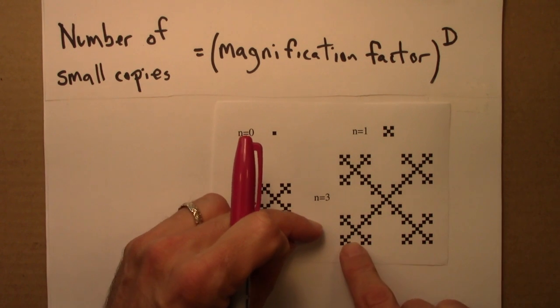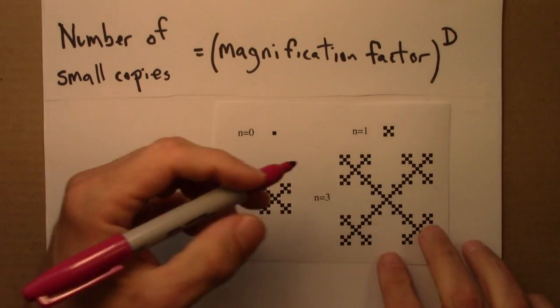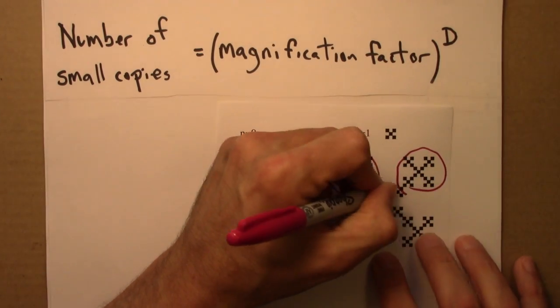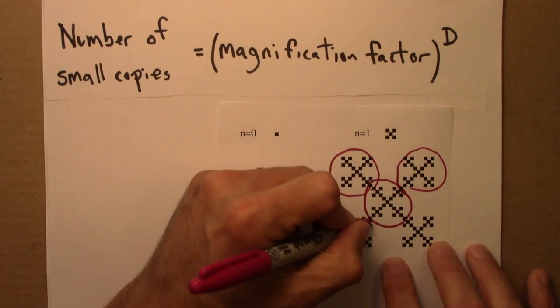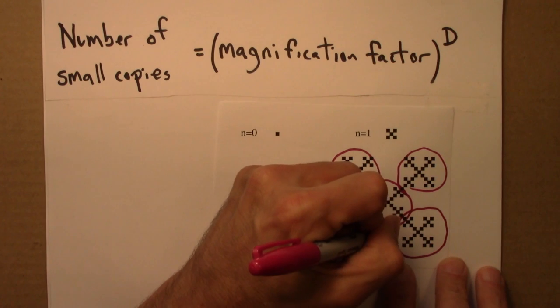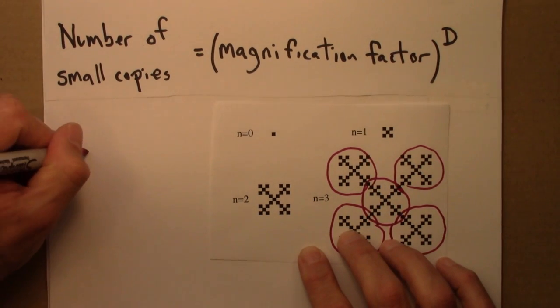Number of small copies, let's look at this picture. I see one, two, three, four, five. So the number of small copies is five.